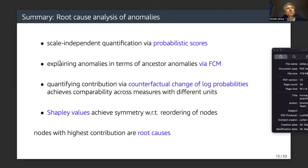To summarize: RCA of anomalies provides a scale-independent quantification via probabilistic scores, explains anomalies in terms of ancestor anomalies via an FCM, quantifies contribution via counterfactual change of log probabilities — which achieves comparability across measures with different units — and Shapley values achieve symmetry with respect to reordering of nodes. Nodes with the highest contributions can be called root causes.